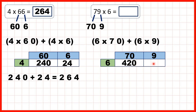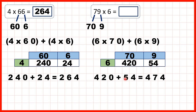And here we need 6 times 9, which is 54. So now we add our answers and 420 plus 54 is 474. So that's our answer.